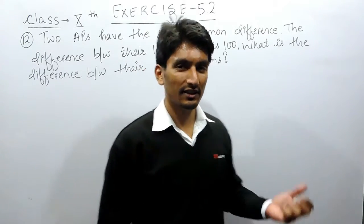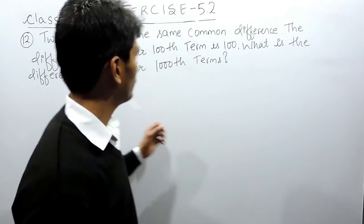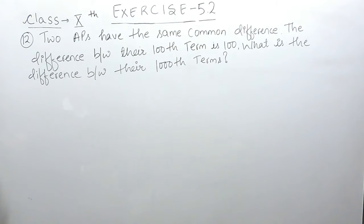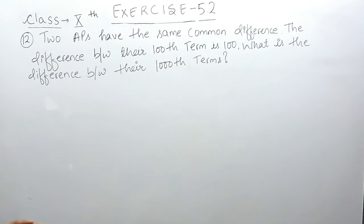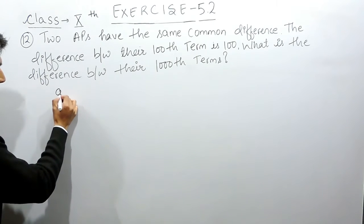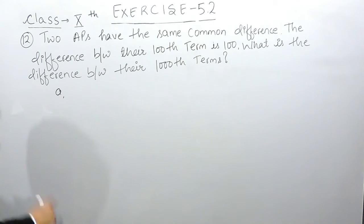Hello everyone. In this video we are going to solve question number 12 of exercise 5.2. The question says: two APs have the same common difference. The difference between their hundredth terms is 100. What is the difference between their thousandth terms?